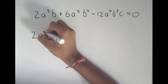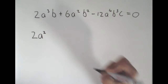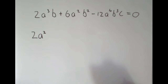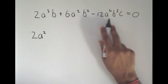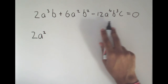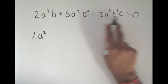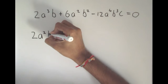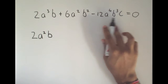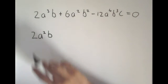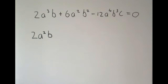Now let's look at the b's. I have a b, a b², and a b³. So I can take out a b from all of these. And for the c's, I only have a c in one term — I don't have a c in the other two — so I can't take it out. This is all that I can take out.